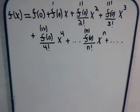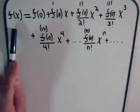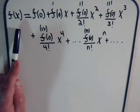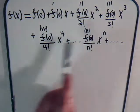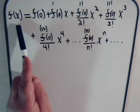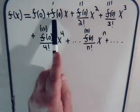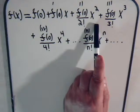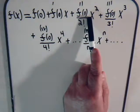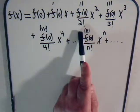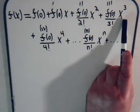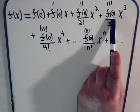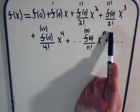In part two of our video on Taylor series and the binomial expansion, we determined in the last video that if a particular function can be expressed as a power series, the first term is the function evaluated at x equals zero. The coefficient of x is the first derivative at zero, and the coefficient of x squared is the second derivative evaluated at zero, divided by two factorial. This pattern continues to infinity.